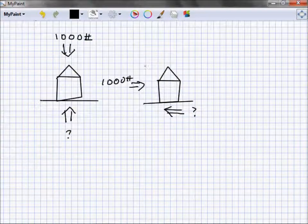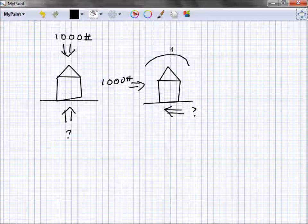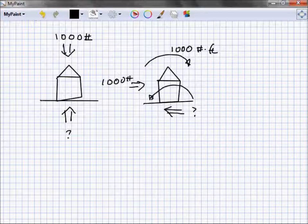That same wind is generating 1,000 pound-foot of moment. How much does the weight of the building have to resist? 1,000 pound-foot. See how easy this is? Everything's got to equal. Everything's got to equal.